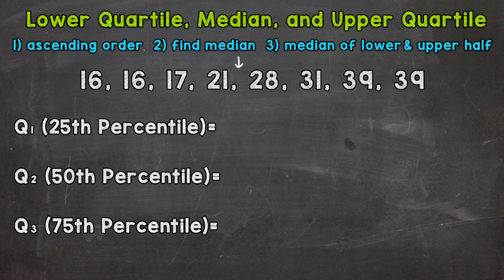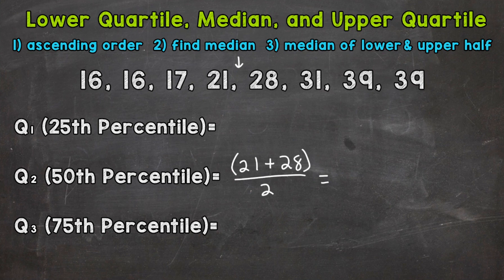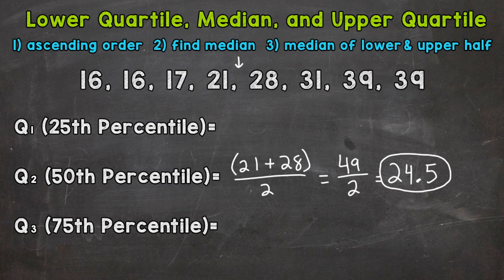We need to find the middle between 21 and 28 by finding the average. So for Q2 — quartile two, the median, the 50th percentile — we add 21 plus 28 and divide by two. 21 plus 28 gives us 49, and 49 divided by two is 24.5, or 24 and a half. That's going to be our median, the middle point of our data set. Once we have our median, we need to find the median of the lower half and the median of the upper half to get the lower and upper quartiles.